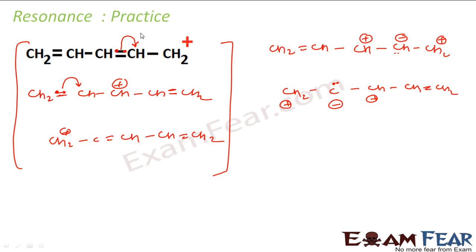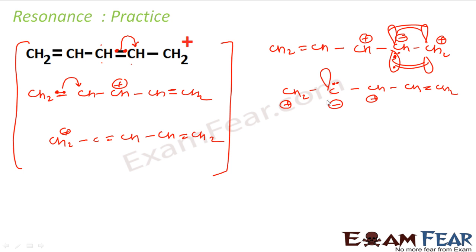The best way to move electrons is to take the two pi electrons and place them on the adjacent carbon. Since the bond was shared between two carbons, one gets a positive charge and the other gets a negative charge. A p orbital with two electrons (negative charge) overlaps with an empty p orbital (positive charge) to form a new double bond. This is how each resonating structure is generated — the double bond shifts position with each step.